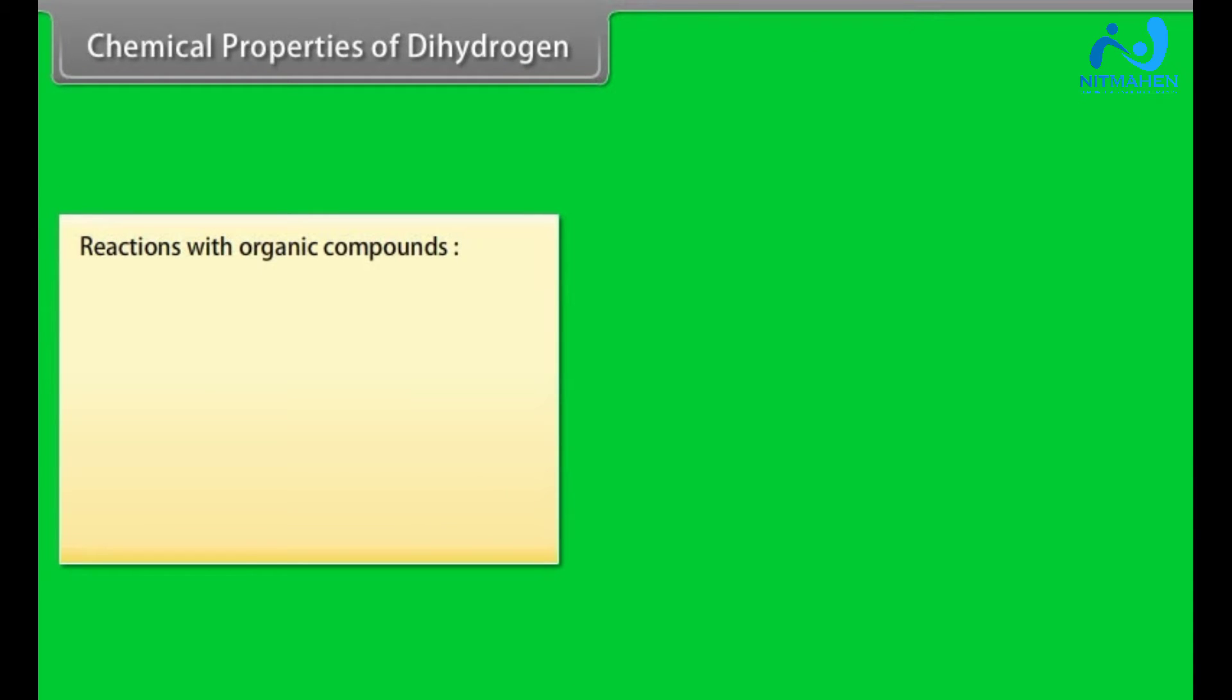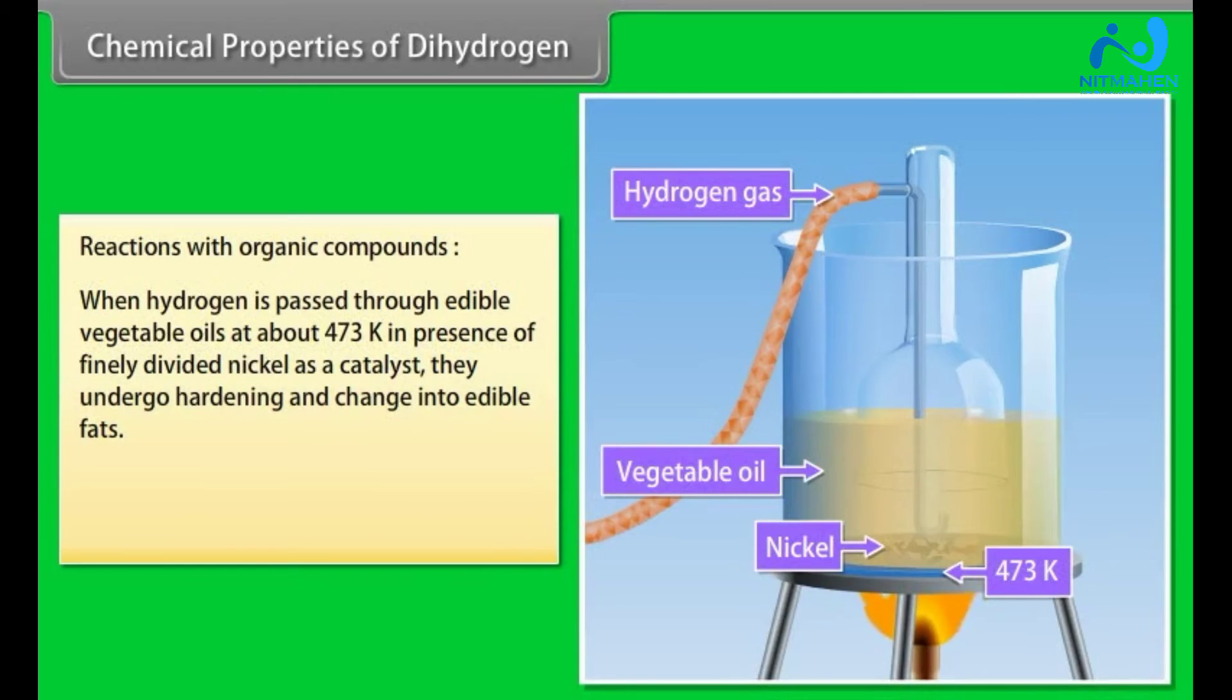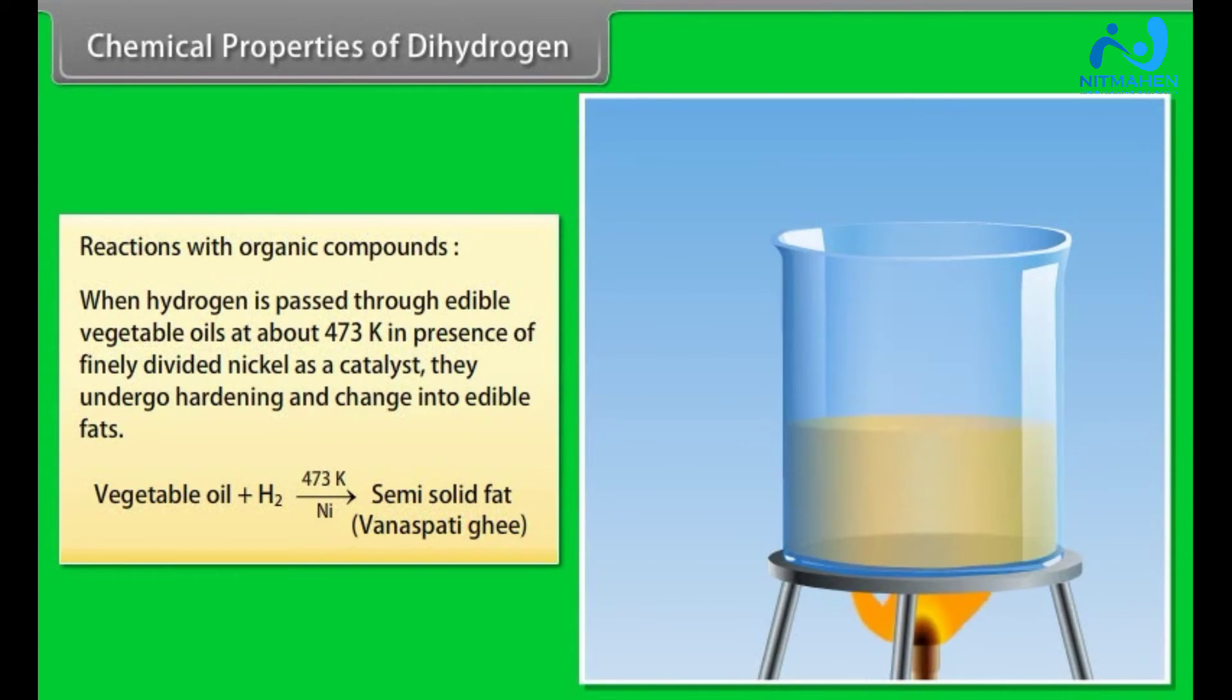Reactions with organic compounds: When hydrogen is passed through edible vegetable oils at about 473 Kelvin in presence of finely divided nickel as a catalyst, they undergo hardening and change into edible fat.